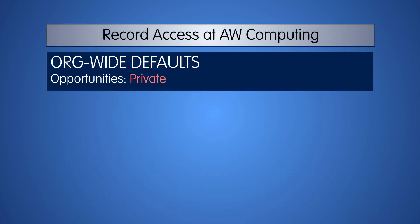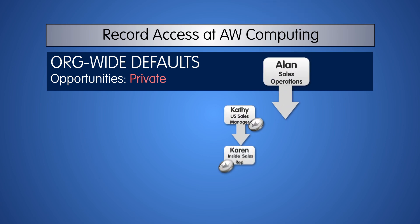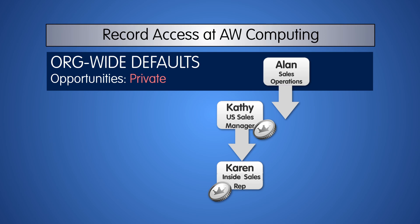At AW Computing, we set the org-wide sharing settings on opportunities to private, so only the person who owns the record can see it. We then created a role hierarchy to open up access to certain roles. Now Sales Ops can see the opportunities of all users below them in the hierarchy, and the U.S. Sales Managers can see the opportunities of users in the U.S. Sales Rep role.